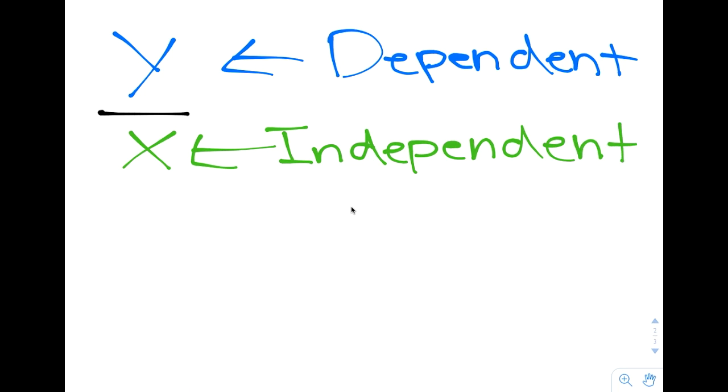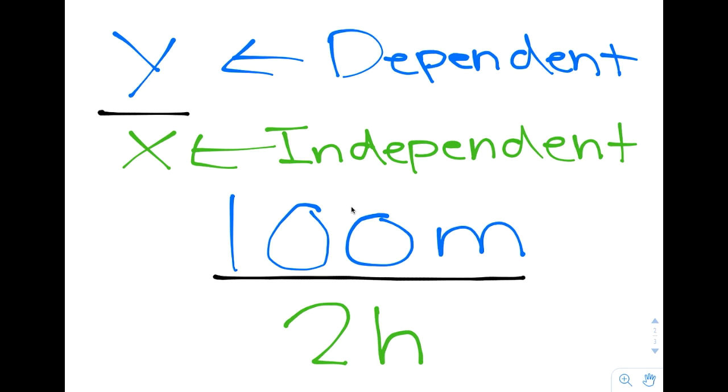For example, 100 miles every 2 hours. Here your y is 100 miles because it is dependent on your x, which is 2 hours.